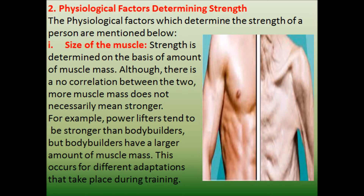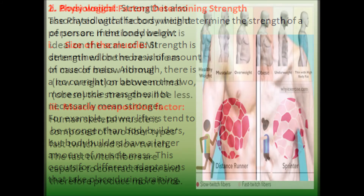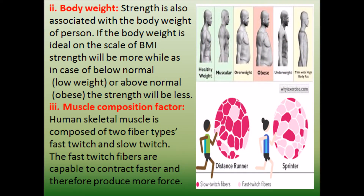The second point is body weight. Strength is also associated with the body weight of a person. If the body weight is ideal on the scale of BMI, strength will be more. That means if an individual falls in 18.5 to 24.9 on the BMI scale, he will have more strength comparatively to those persons whose BMI scores are below normal — that means they are of low weight — or above normal, meaning those persons who are obese. The strength will be less.